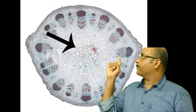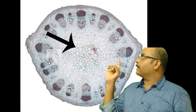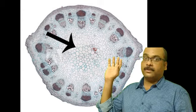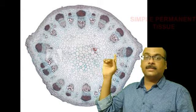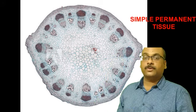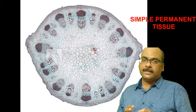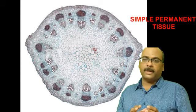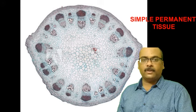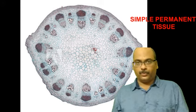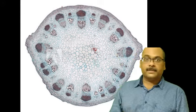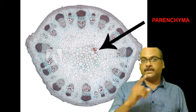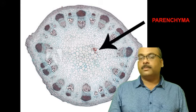See the cells in the center, they are of same type, and they have similar structure. Their function is also same. So we can call them as simple permanent tissues, because all the cells in that group are of same type, and all have same function. And the cells in the center are known as parenchyma. So there is a first type of simple permanent tissue, parenchyma.